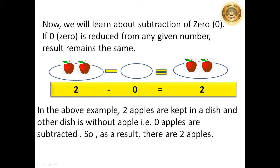In the above example, 2 apples are kept in a dish and other dish is without apple. That is, 0 apples are subtracted. So, as a result, there are 2 apples.